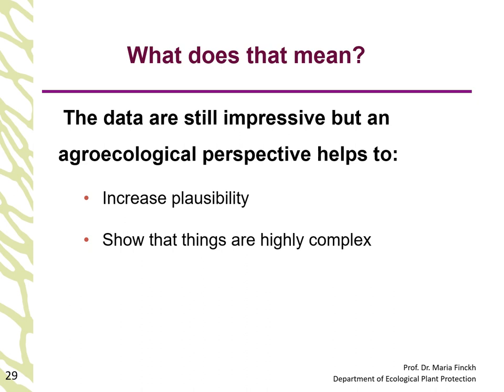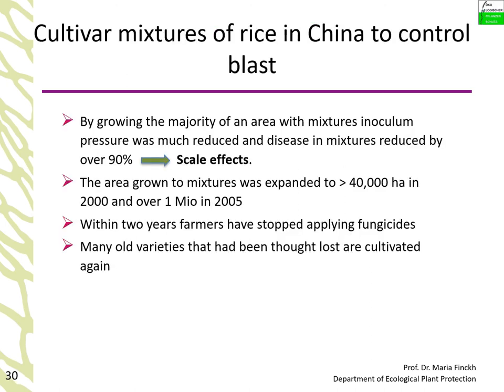The data are still impressive, and an agroecological perspective helps increase the plausibility of interpretation, showing that things are highly complex. By growing the majority of the area with mixtures, inoculum pressure was greatly reduced overall, with disease in mixtures reduced by over 90% — also a scale effect. The area grown to mixtures expanded to over 40,000 hectares in 2000 and more than 1 million hectares in 2005. Farmers stopped applying fungicides, and many old varieties thought to be lost are now cultivated again; farmers even grow fish in their fields.